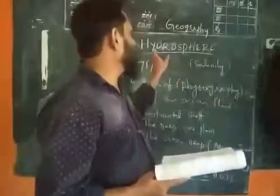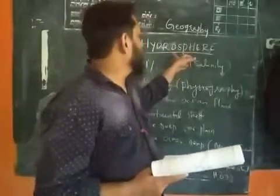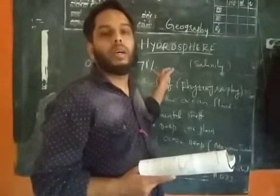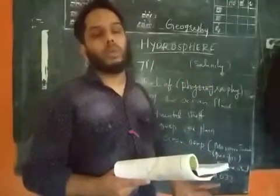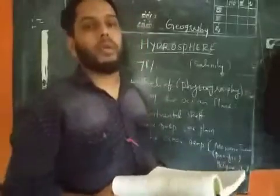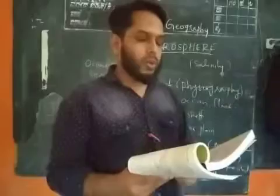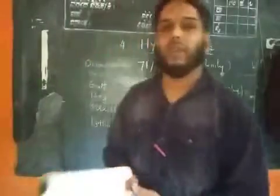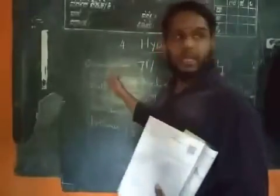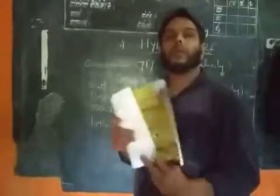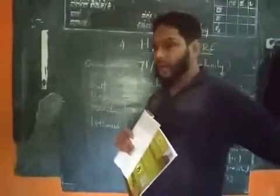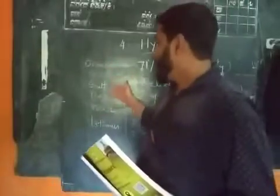The hydrosphere is the sphere of water. The word 'hydro' refers to water. We know that 71% of our earth is covered by water bodies. There are four oceans: the Pacific Ocean, Atlantic Ocean, Indian Ocean, and Arctic Ocean. The different types of water bodies include oceans, sea, gulf, bay, strait, and isthmus.